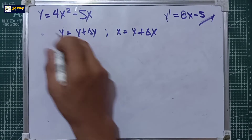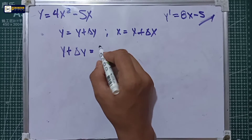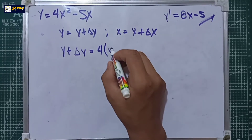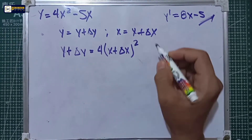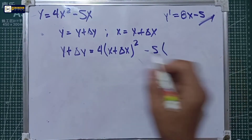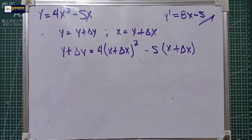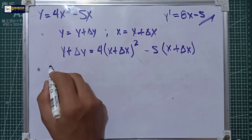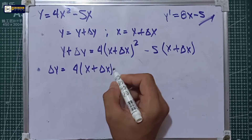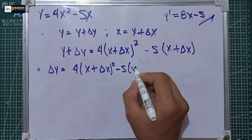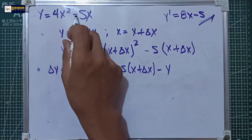So the equation is: y plus delta y is equal to 4 multiplied by x plus delta x, with exponent squared, minus 5 multiplied by x plus delta x. Step number two: transpose the y. So delta y is equal to 4 multiplied by (x plus delta x) squared, minus 5x, minus y, where y is equal to 4x squared minus 5x. So delta y equals 4(x plus delta x) squared minus 5x minus (4x squared minus 5x).